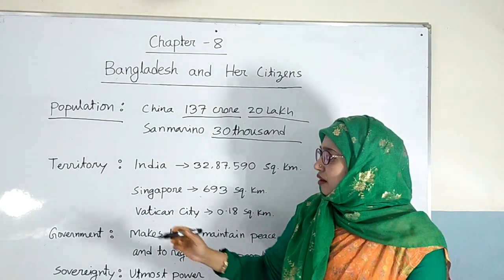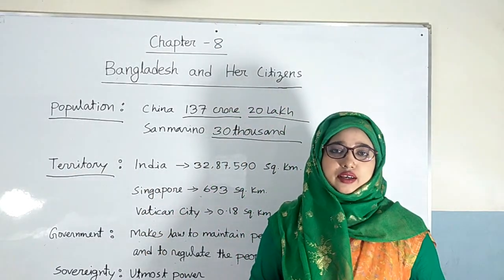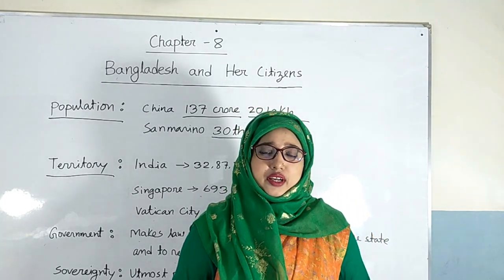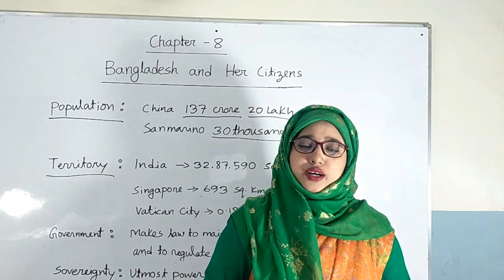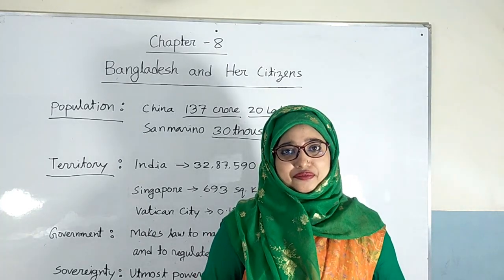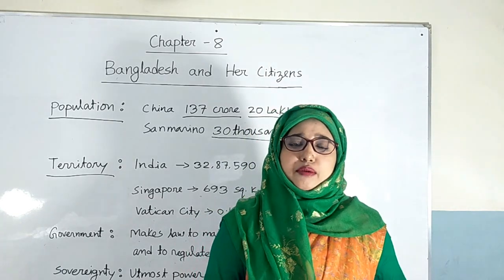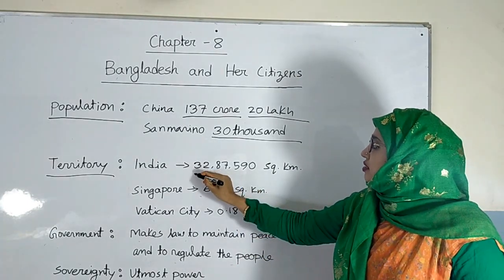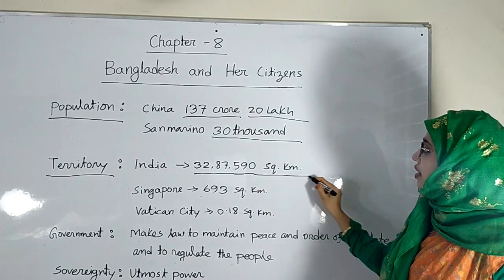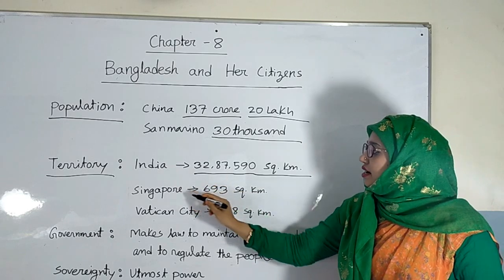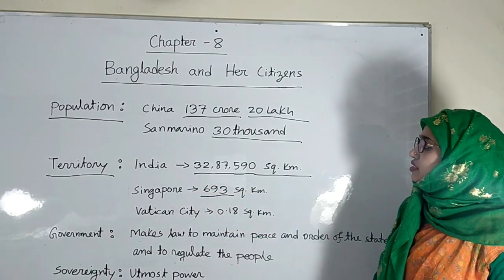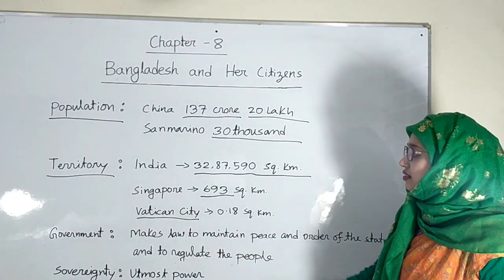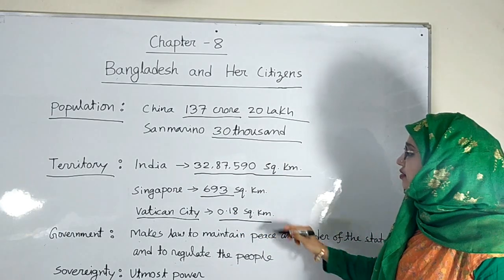Now I am going to discuss definite territory. It is called the body of a state. Without a definite territory, a state cannot be formed. A state includes water, air and land mass. There is no limited boundary to form a state. The area of India is 32,87,590 square kilometers. On the other hand, the area of Singapore is 693 square kilometers. And the smallest country in Europe, which is Vatican City, has an area of only 0.18 square kilometers.